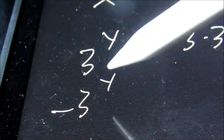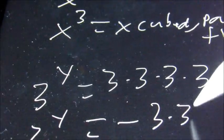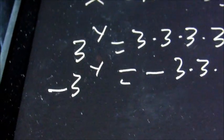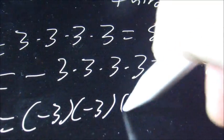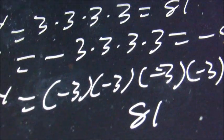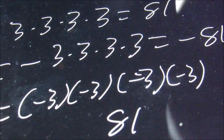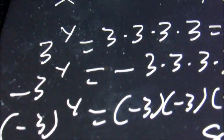If we have negative three to the four, the exponent only affects what is directly in front of it. So we get negative three times three times three times three, which is negative 81. We don't raise the negative to the power unless we have negative three in parentheses. Then the four affects everything in the parentheses: negative three times negative three times negative three times negative three equals positive 81, because negative times negative is positive, times negative is negative, times negative is positive.